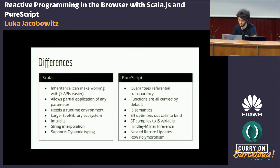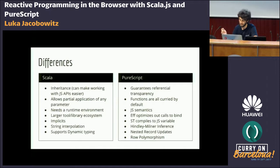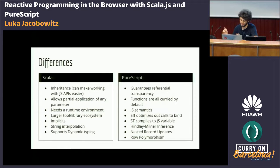In Scala.js specifically, we need a runtime environment because Scala is a language in itself, so to support JavaScript we need to support all of the Scala semantics, which incurs a runtime cost. In contrast, PureScript has JavaScript semantics, so there is no runtime overhead at all. PureScript functions are just JavaScript functions, whereas in Scala a function is actually an object and a class — there are some subtle differences to consider.